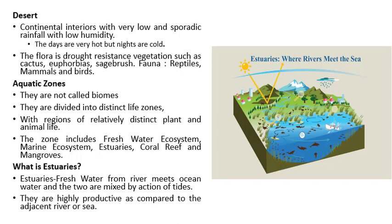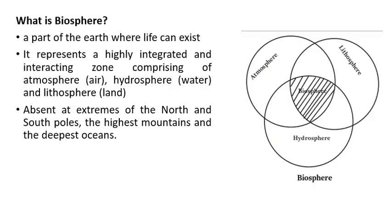Next comes aquatic zones. They are not called biomes but are divided into distinct life zones with regions of relatively distinct plant and animal life. The aquatic zone includes freshwater ecosystem, marine ecosystem, estuaries, coral reefs, and mangroves. Estuaries are formed when freshwater from rivers meets ocean water and the two are mixed by the action of tides. They are highly productive compared to the adjacent river or sea.